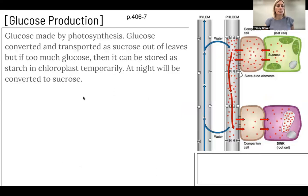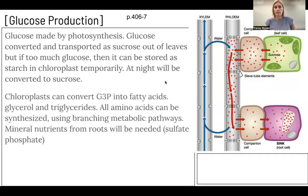When looking at glucose production, glucose is made by photosynthesis. Glucose is converted and transported as sucrose out of the leaves. If there is too much glucose in the leaves, it can be converted to starch and stored in the chloroplast temporarily, then at nighttime converted into sucrose. Chloroplasts can also convert G3P into fatty acids, glycerol, and triglycerides. Amino acids can always be synthesized using branching metabolic pathways, but mineral nutrients from the roots — such as sulfate and phosphate — are needed, and remember that proteins may contain sulfur molecules.